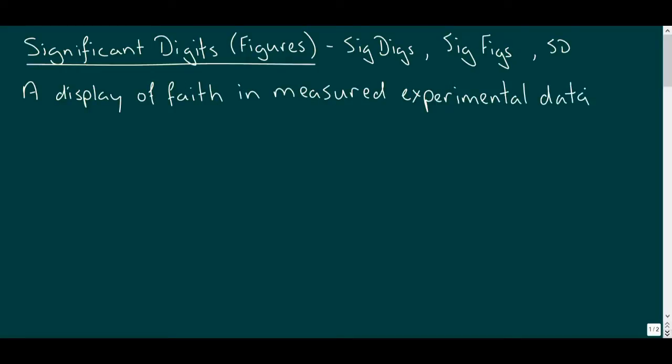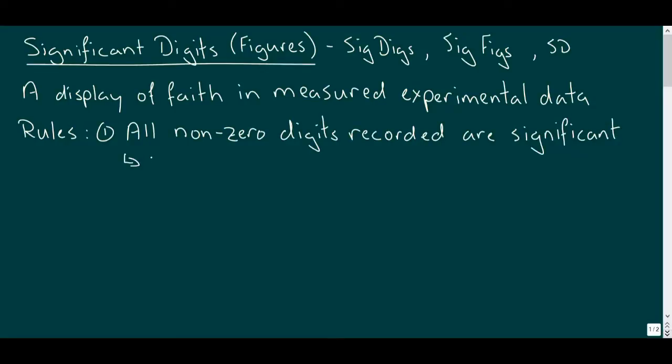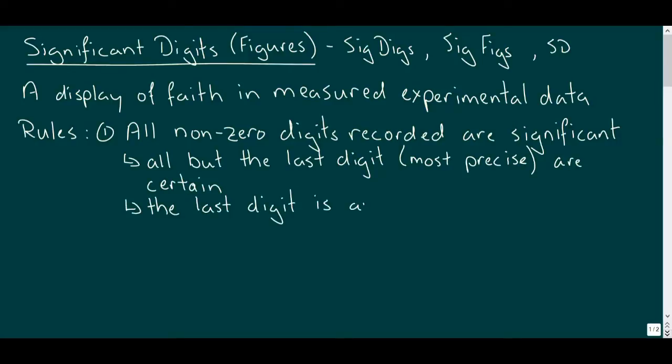Good communication relies on standard conventions or rules. The first rule of sig digs is if we record a digit, it's significant. But significance and certainty are not the same thing. Our last recorded digit is our best estimation given the measurement conditions, so this limits the precision of the measurement. But we should be reasonably certain of all the other digits recorded. This is true for zeros as well, but we have to add a few more conditions when it comes to interpreting their significance.